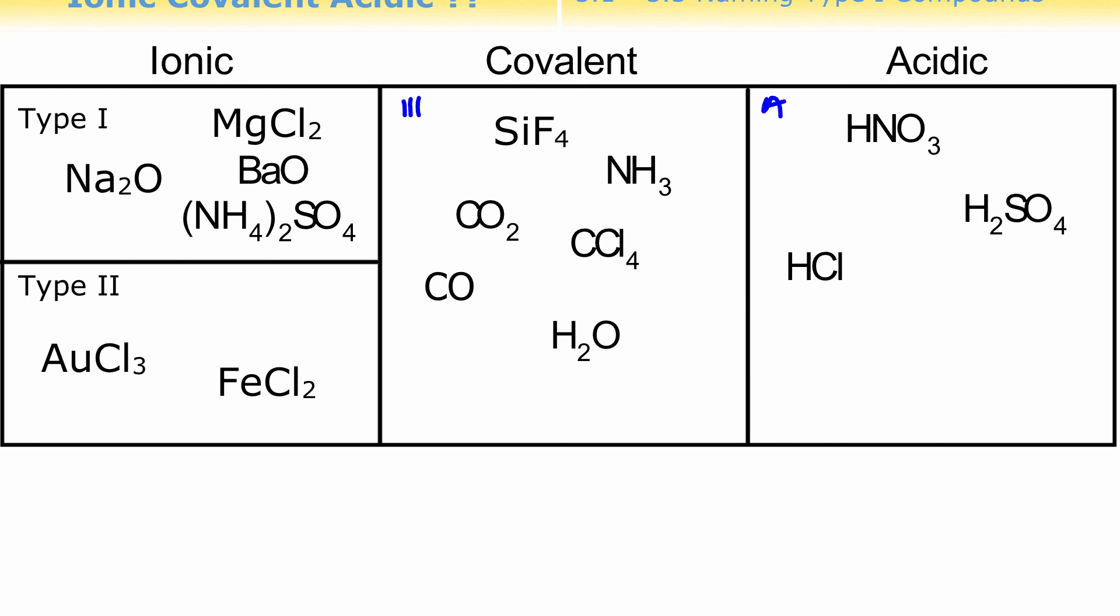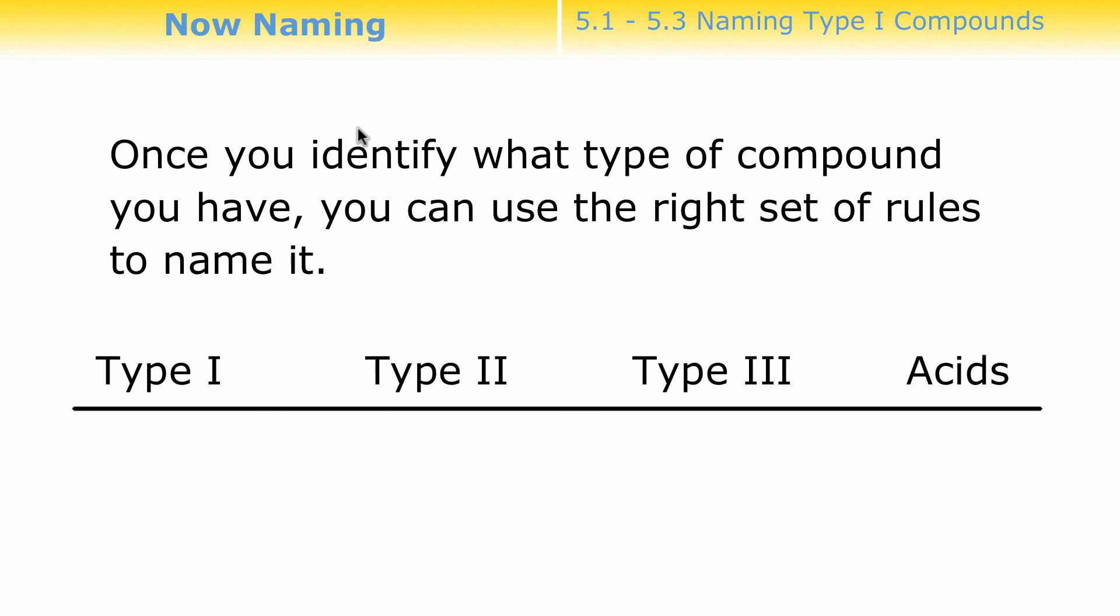Okay, so hopefully that helps out in identifying types of compounds. Once you've identified what type of compound you have, then you'll be ready to start naming it according to the four different kind of rules that we need to name those compounds. Thank you.